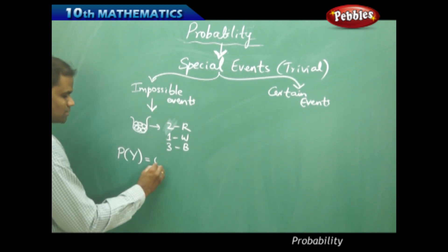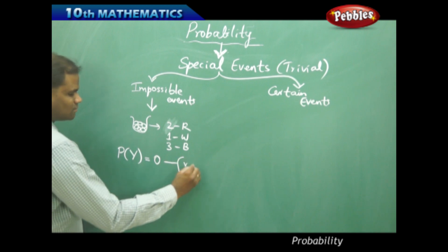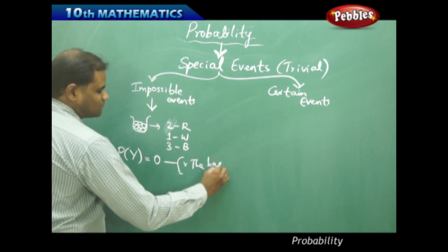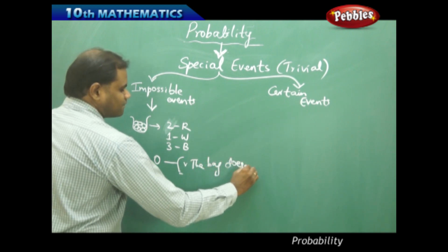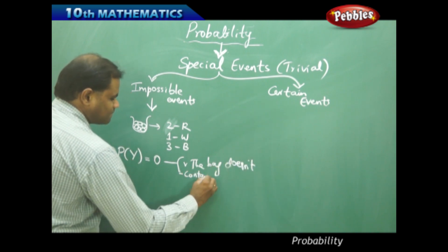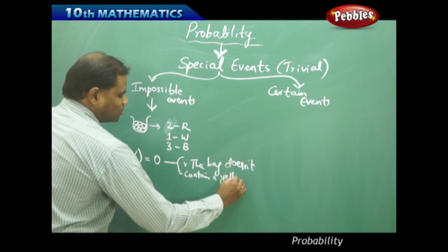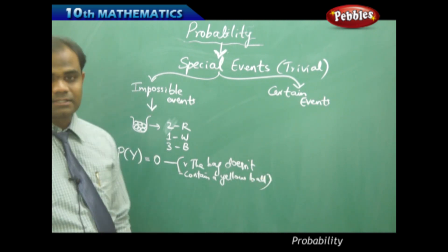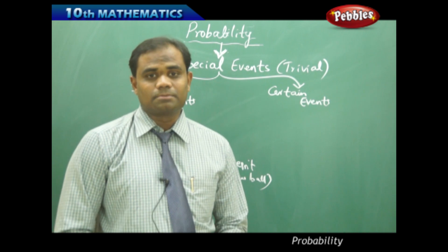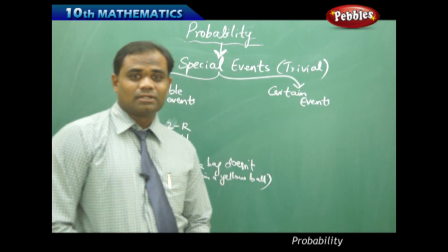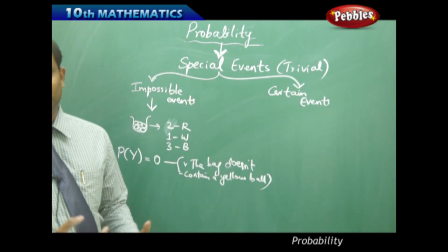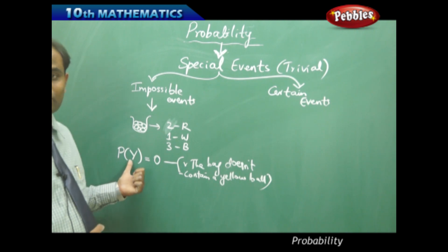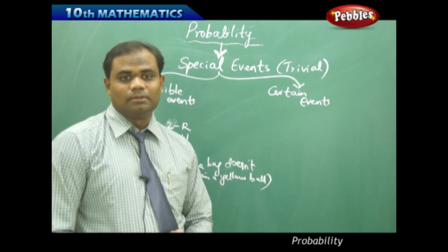So picking a yellow ball is zero since the bag doesn't contain a yellow ball. Therefore these kind of events are called impossible events, where the situation goes totally out of possibility. Picking a yellow ball is one case in this example problem.